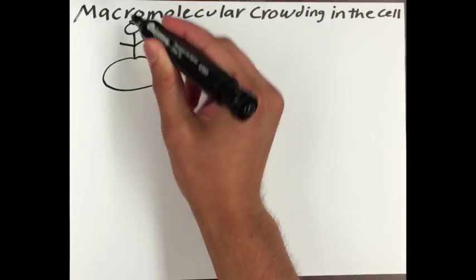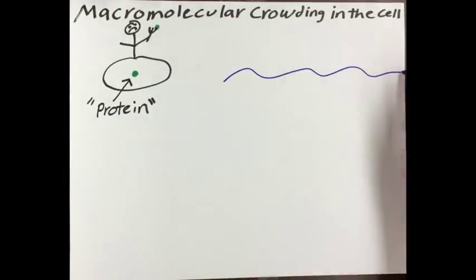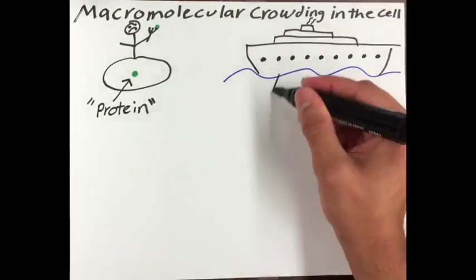The cell contains objects of a huge range of sizes. In fact, if a protein were the size of a pea, then the nucleus would be the size of an ocean liner.